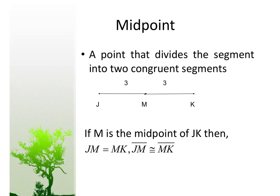A point that divides a segment into two congruent segments is called its midpoint, because it lies in the middle of the segment. In this first example, three is the length of this segment and three is the length of this segment, which means M must be the midpoint because it cuts JK into two congruent parts.